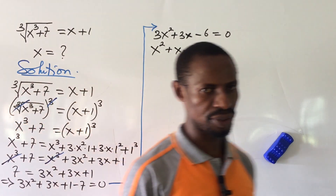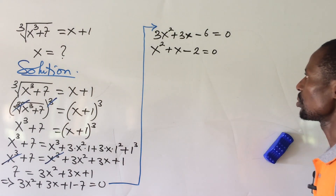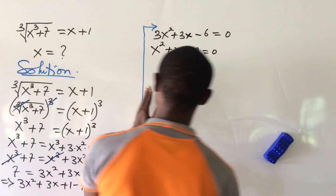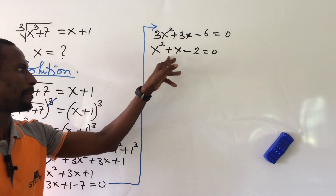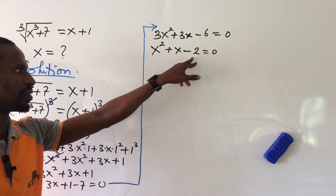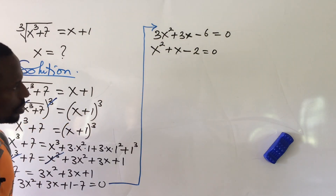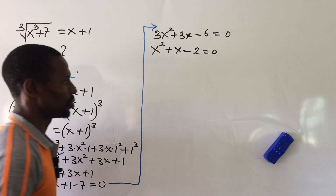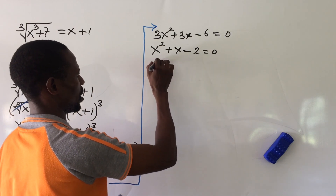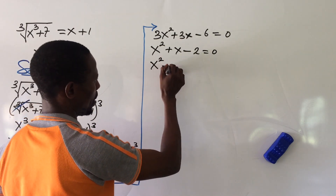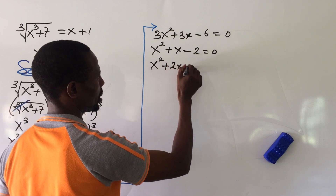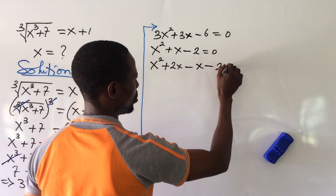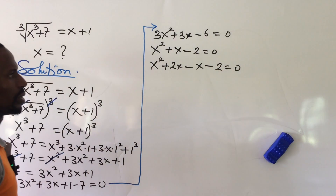Now we solve by factorization. We look for two numbers that when added give +1 (the coefficient of x) and when multiplied give −2. Those numbers are +2 and −1. So we rewrite as x² + 2x − x − 2 = 0.